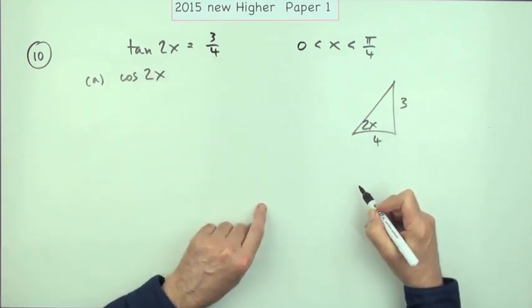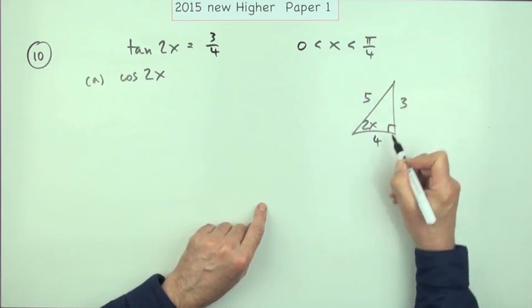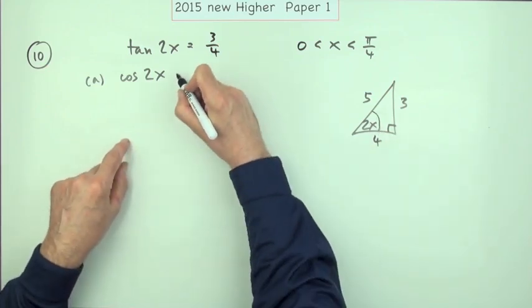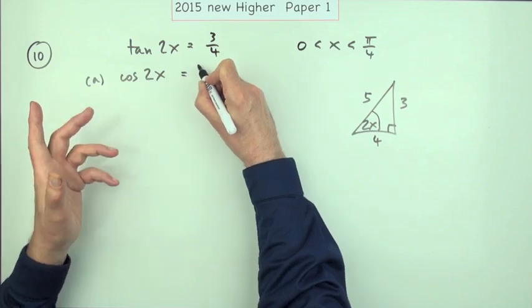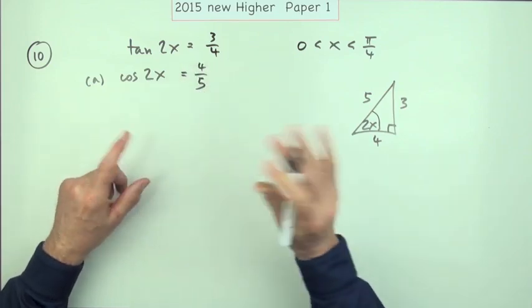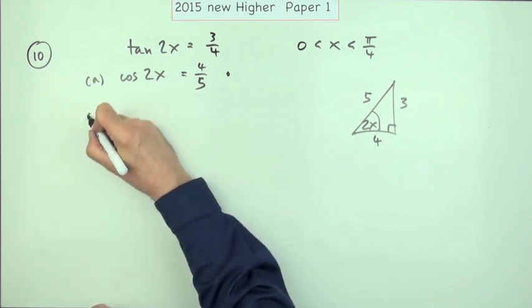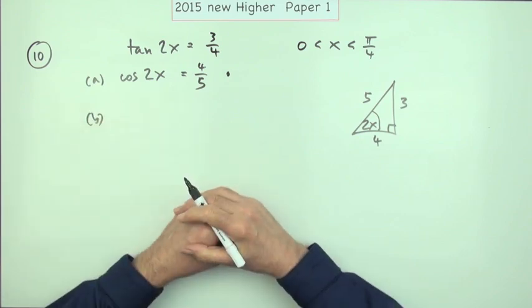Opposite over adjacent means that the hypotenuse must be five, so the cosine is going to be the adjacent one to the angle, which is four fifths. So you can just state straight away the cosine is four fifths, and if you do that you get the first mark.